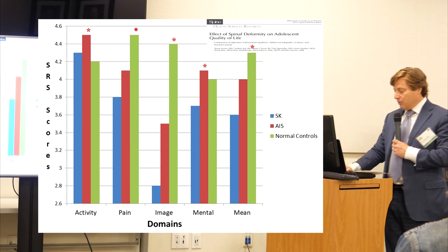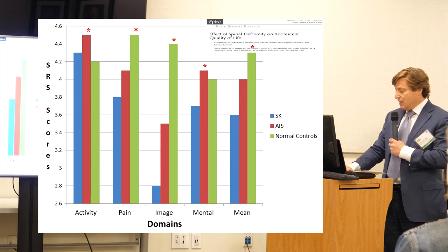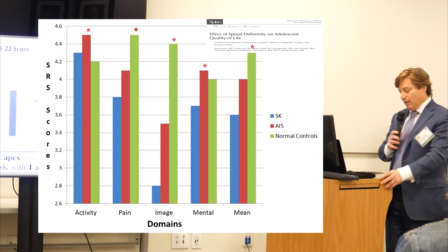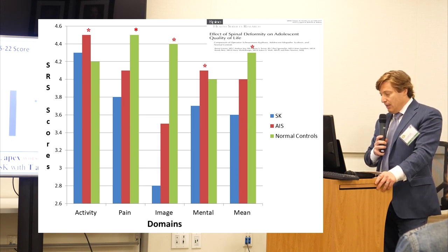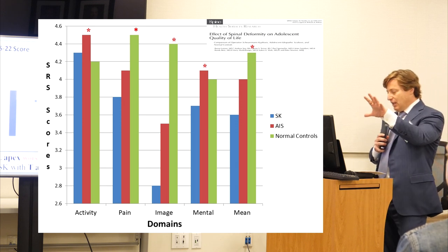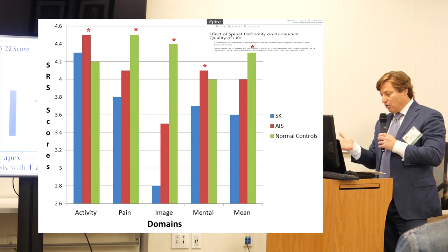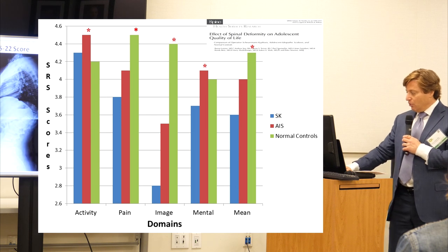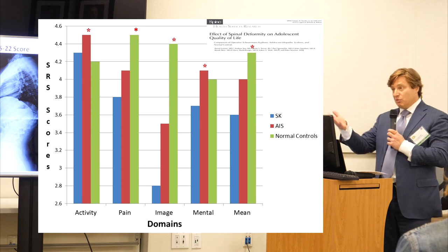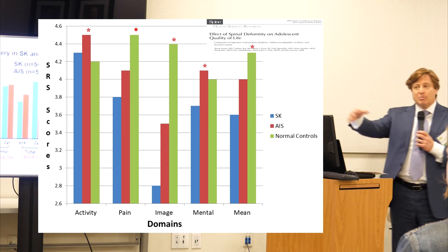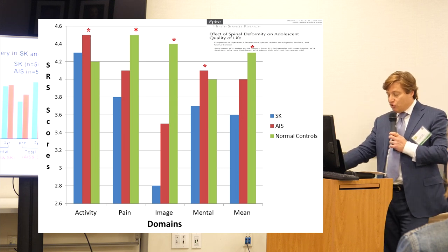The impact on quality of life is more pronounced than for adolescent scoliosis and certainly compared to healthy adolescents without a spinal condition. Looking at different apex locations — thoracic (higher) versus thoracolumbar (lower) — patients with a thoracolumbar apex tend to have more pain. Our research showed the lower apex is more painful.